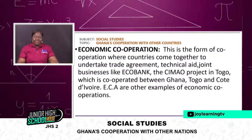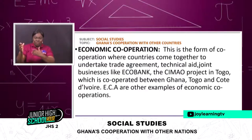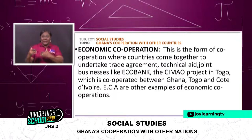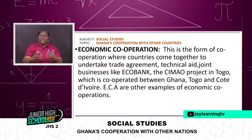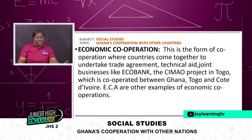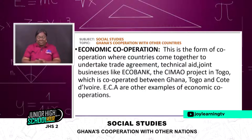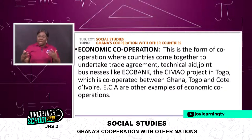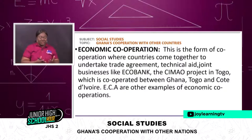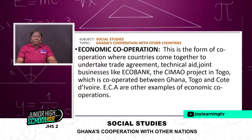Economic cooperation is a form of cooperation where countries come together to undertake trade agreements, business, technical aid, and joint businesses. For example, Ecobank is French but is here in Ghana doing banking business. The CIMAO project, also in Togo, is cooperated between Ghana, Togo, and Côte d'Ivoire. The ECA and other examples of economic operations are part of this community in Ghana.